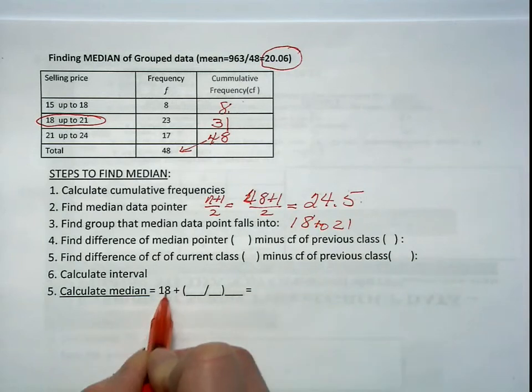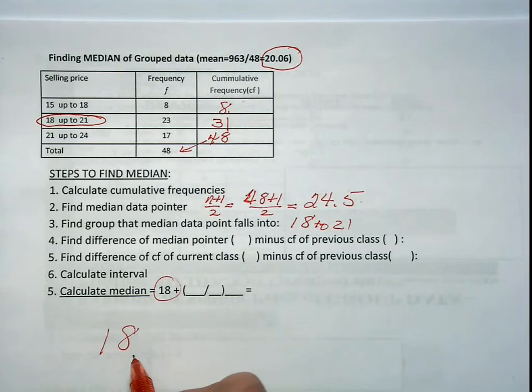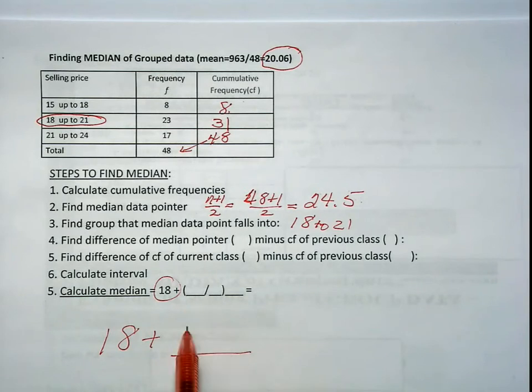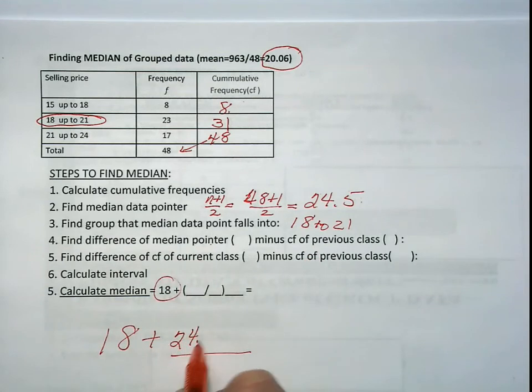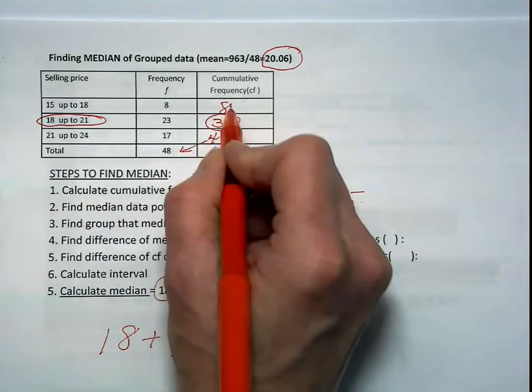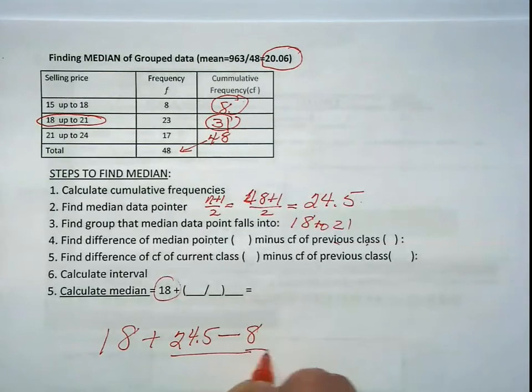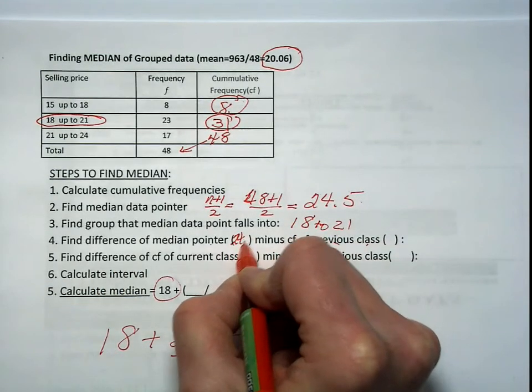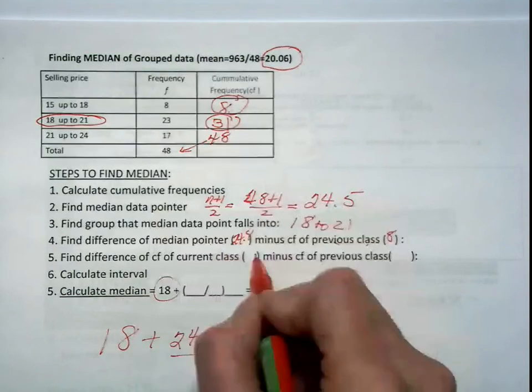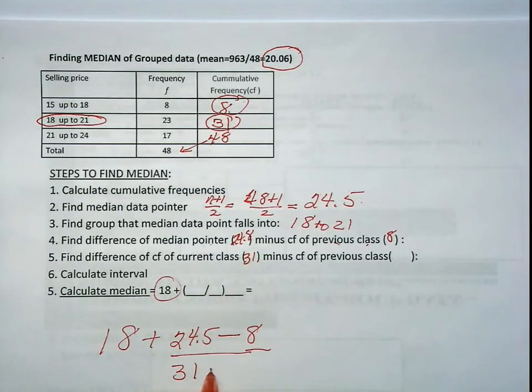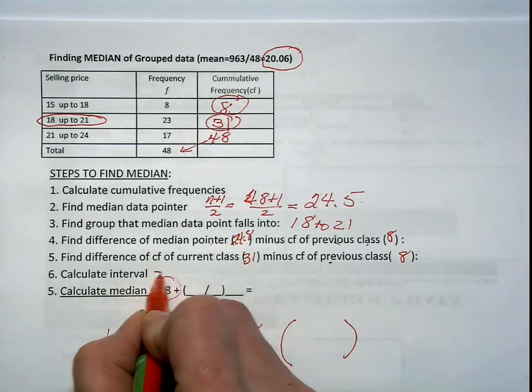So we write, we're going to have 18 plus something, and I'm going to write it nice and big here for you. 18 plus something. Well, what is that plus something? This first data point is the median pointer. Our median pointer is 24.5 minus the previous class. Well, this is the current class, so our previous class is 8. Minus 8. And this is 8. The current class is 31. 31 minus the previous class, which is 8 again.